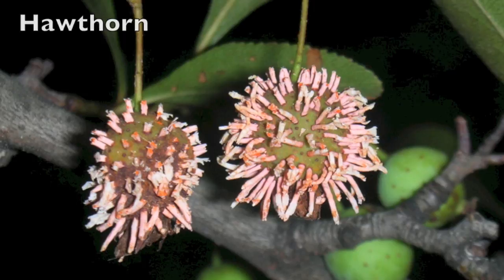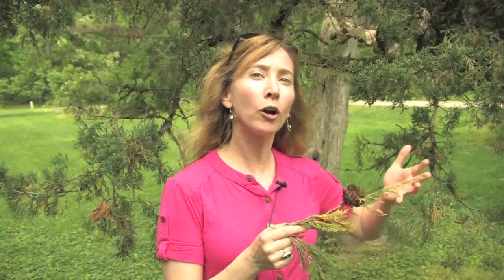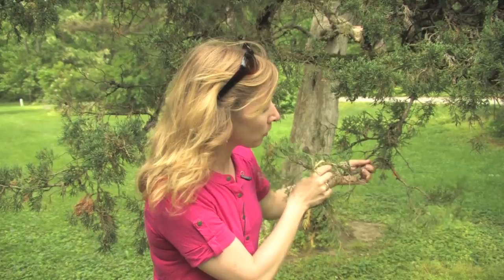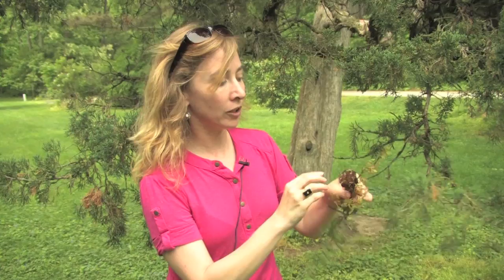We can actually see some of the different juniper rusts — the more correct term to call them. If we look closely on this branch, we can see what is most likely cedar quince rust, which creates these orange flat lesions or galls in the smaller branches. This larger gall here is more likely caused by cedar hawthorn rust, and this one is probably three to four years old. This is a great setup for this disease right now because the crab apple is actually right within my line of sight about 50 feet away. So in a home planting, one of the things you would really want to avoid is planting a susceptible juniper nearby a susceptible crab apple.